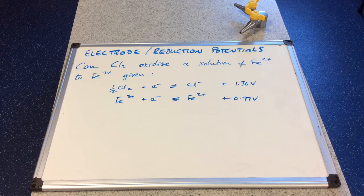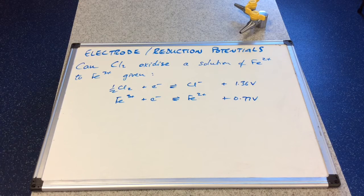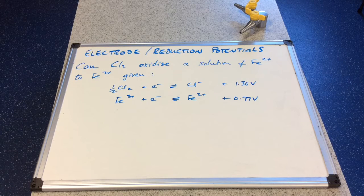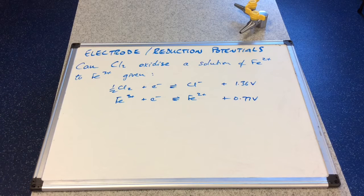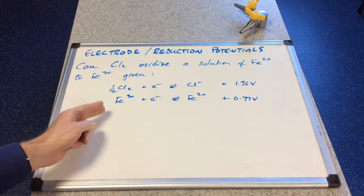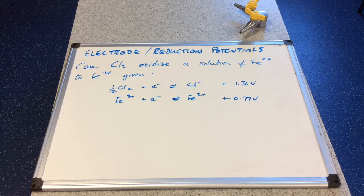So the first thing I would say is look at the values. Establish the more positive one. And that's going to tell you which of these half cells or half equations is going to proceed in the forwards direction, left to right. And the less positive one will have to go in the reverse direction.